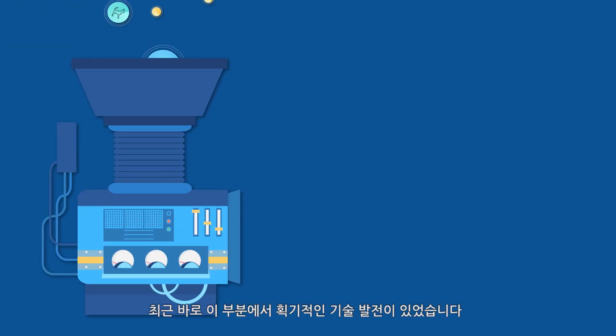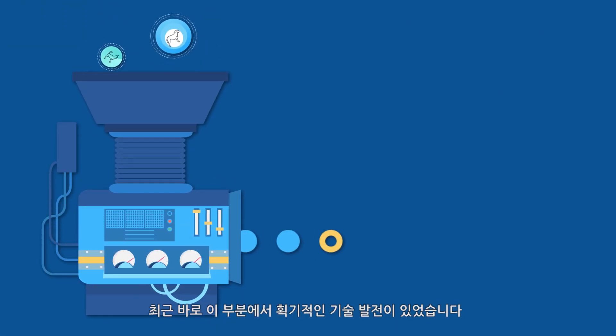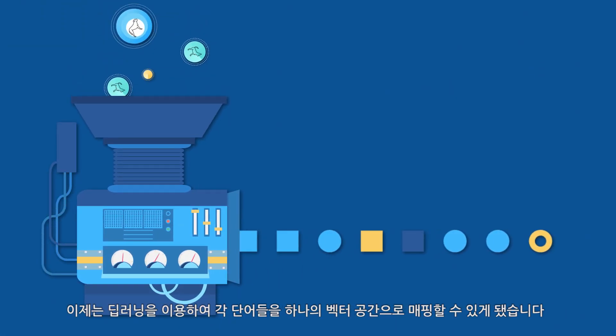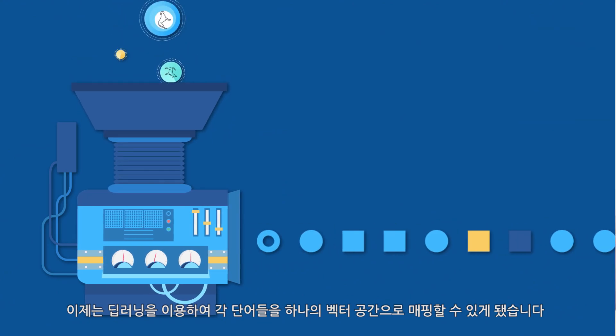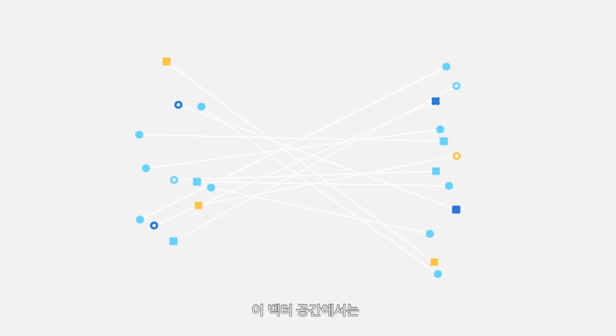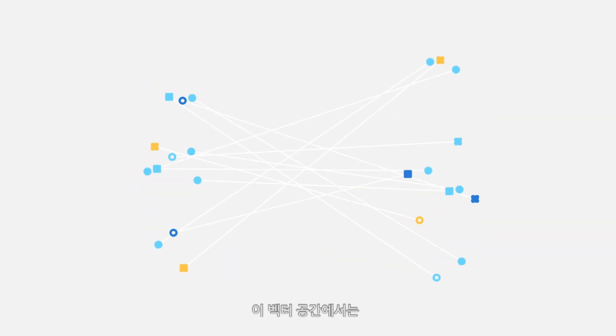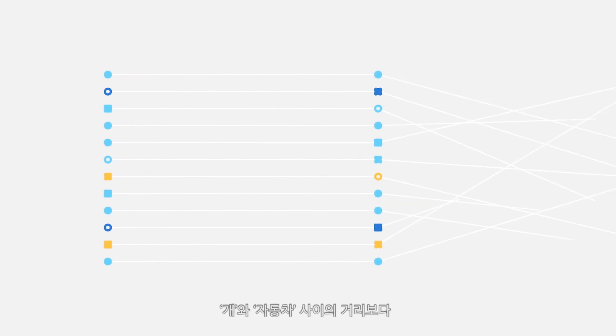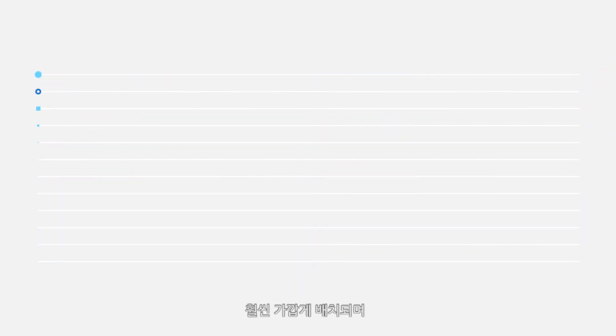The breakthrough here is you can now use deep learning to map each word into a vector. So now in this vector space, dog and chihuahua actually get closer compared to dog and car, and all the words will map to the same vector space. And more interestingly, pair-wise relationships of words could also be encoded in this vector space.